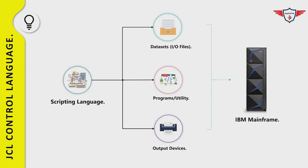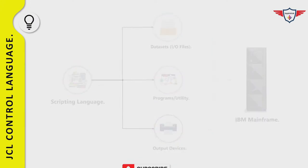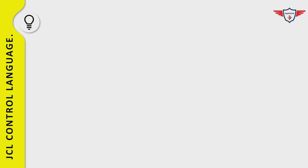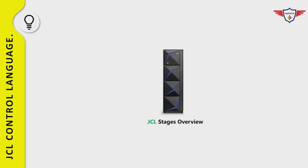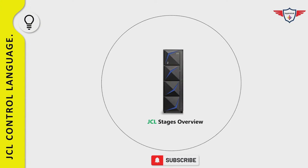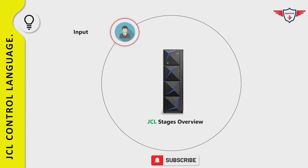Before discussing the different categories of job control statements, let's understand the different stages of JCL. This will help you visualize what happens behind the scenes when you submit a job on the mainframe. JES2 and the base control program of z/OS control the different phases of overall processing. The job queues keep track of jobs waiting to run, currently running, waiting for output, or waiting to be purged from the system.